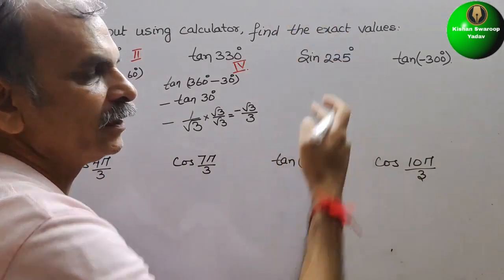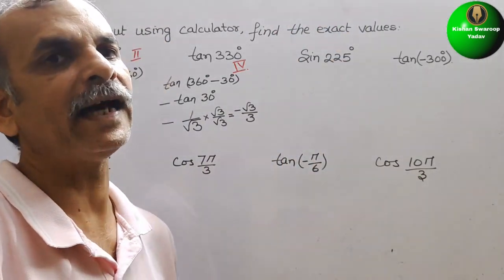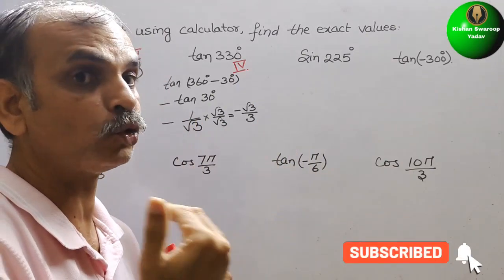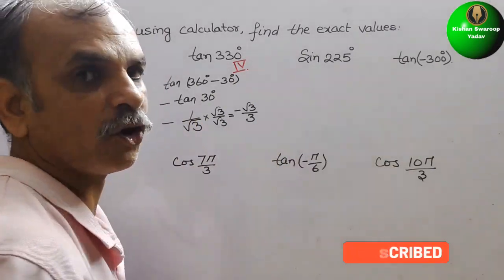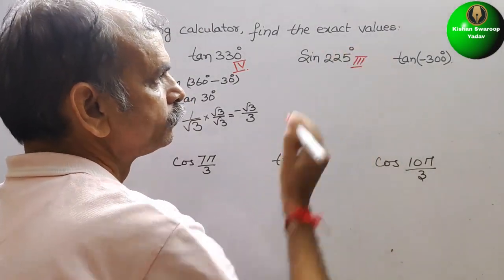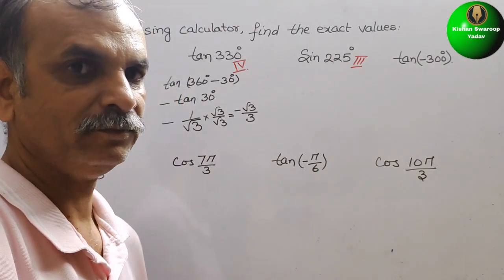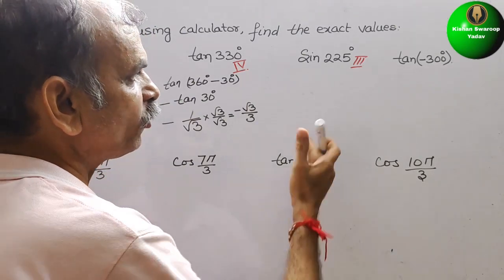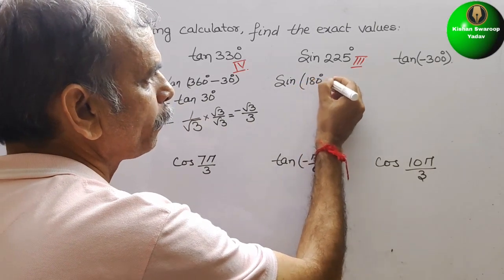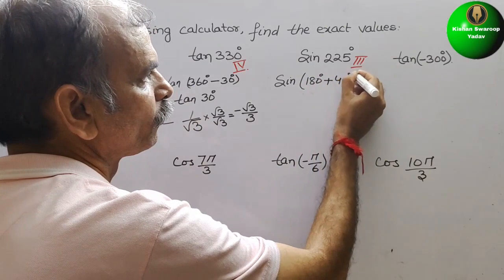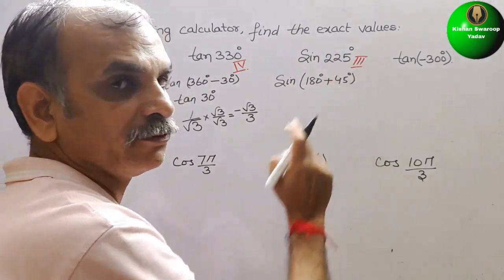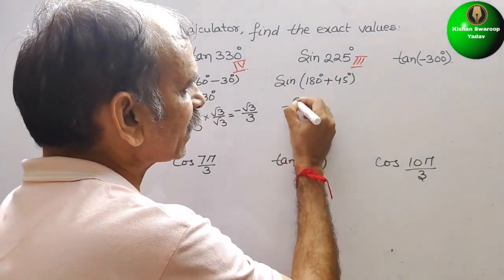Next: sin 225°. 225° lies in the third quadrant — first is 90°, second is 180°, third is up to 270°. In the third quadrant, sine is negative. Therefore, we will write it as sin(180° + 45°), which is sin 225°. Since sine is negative, we write minus sin 45°.